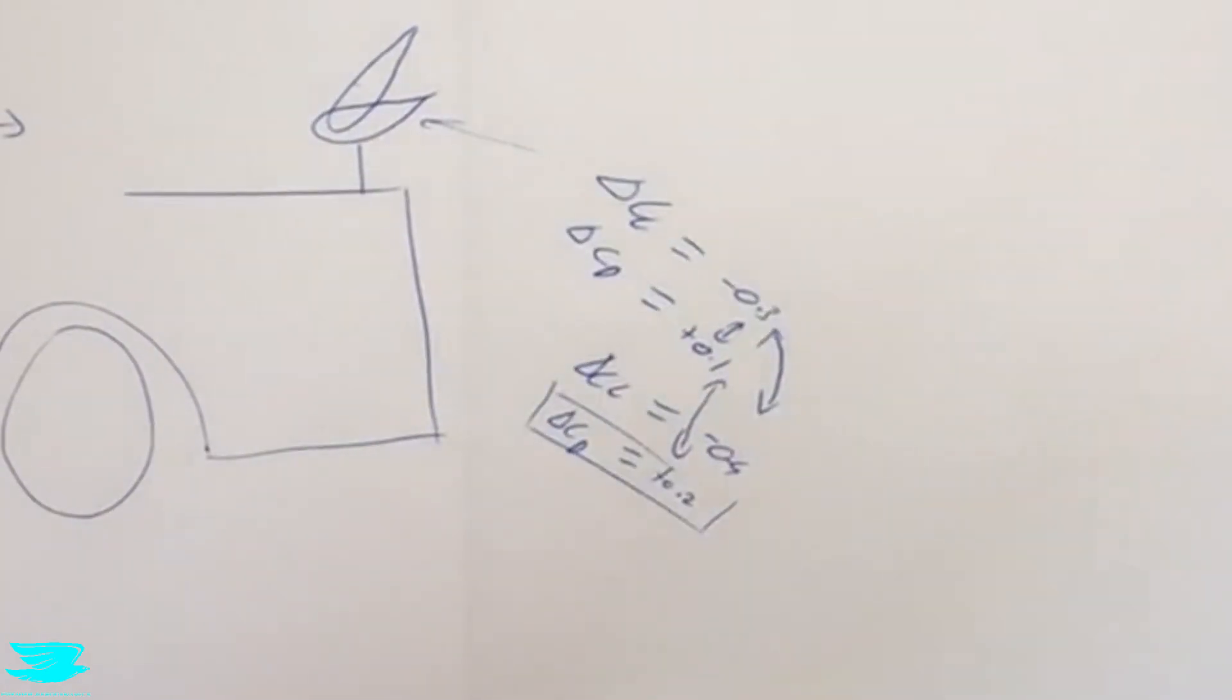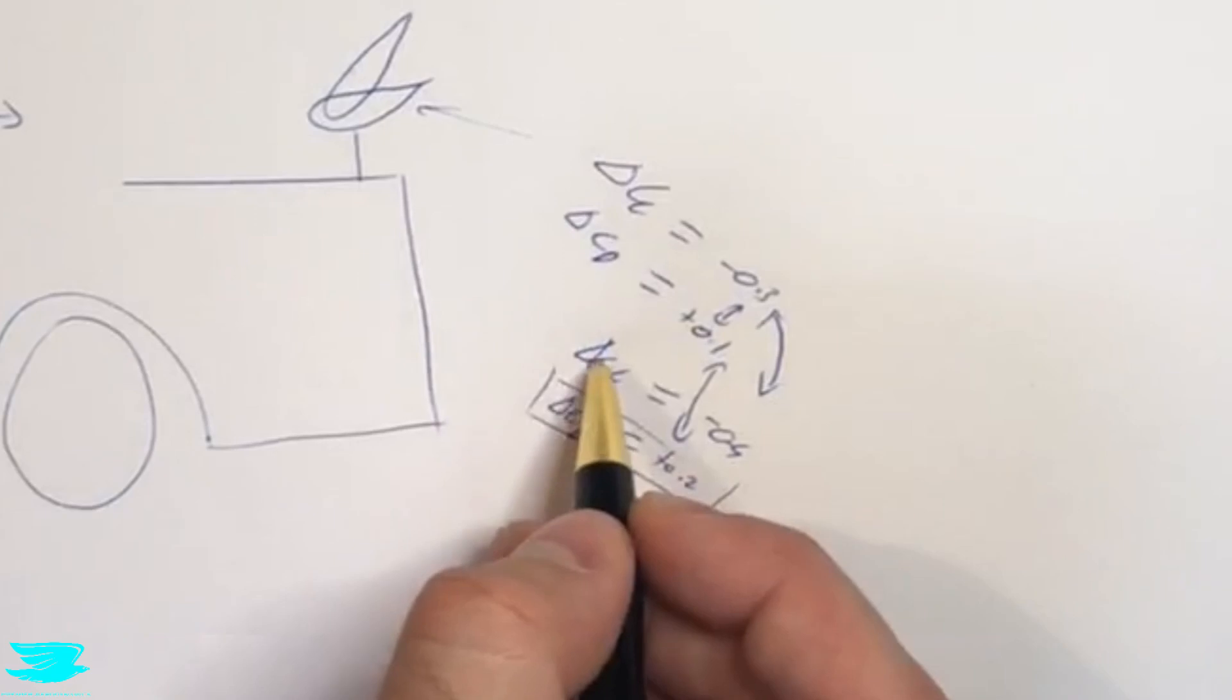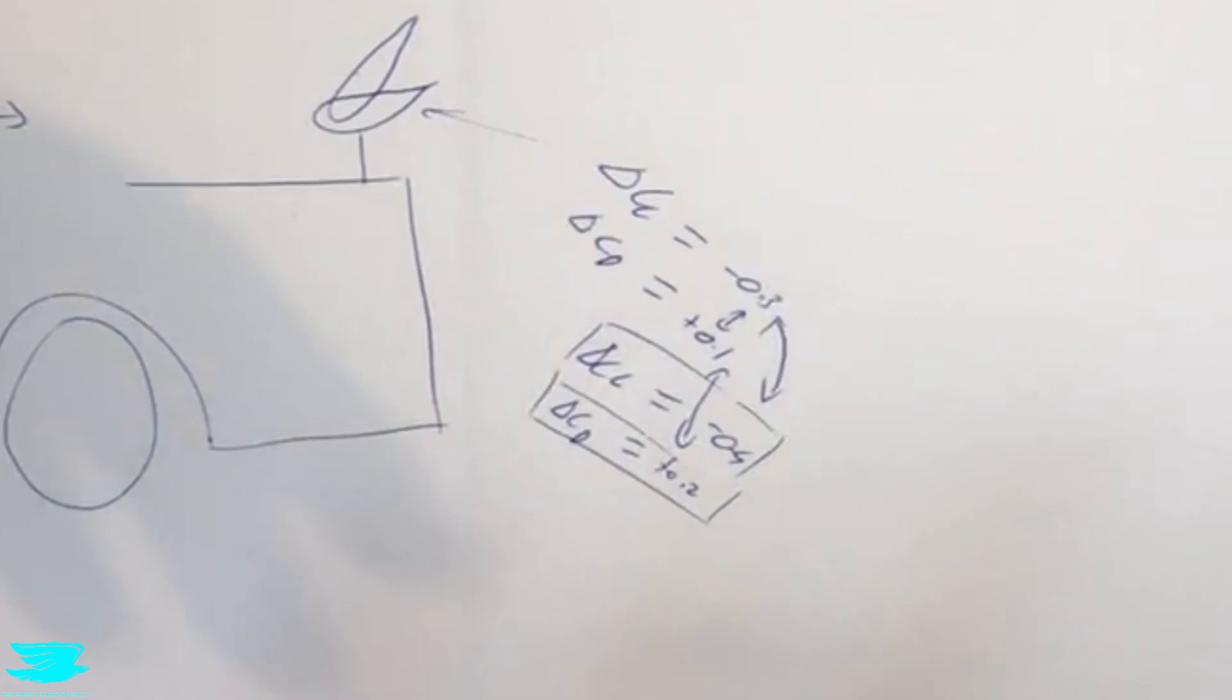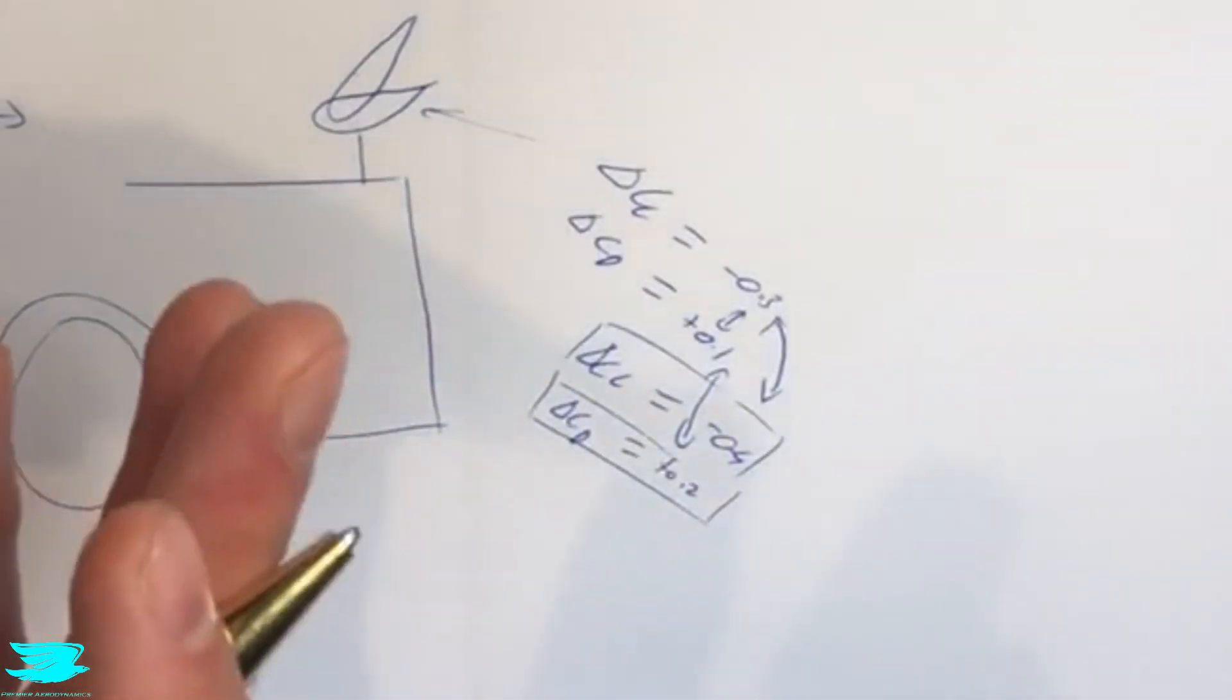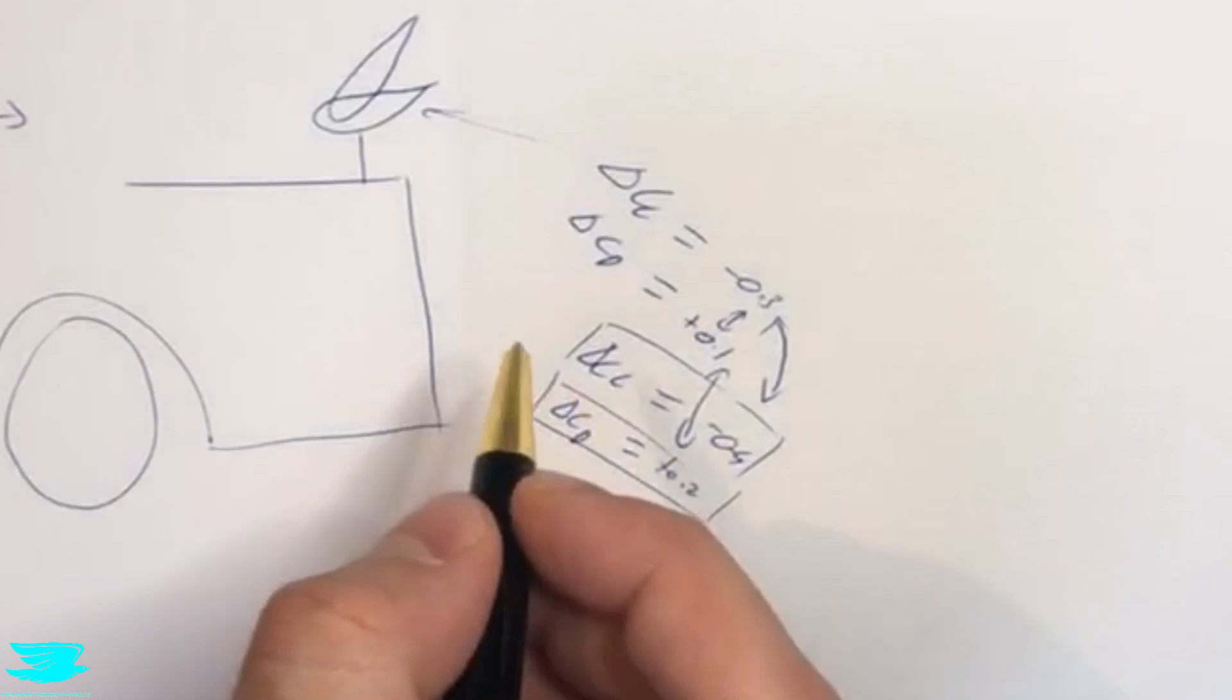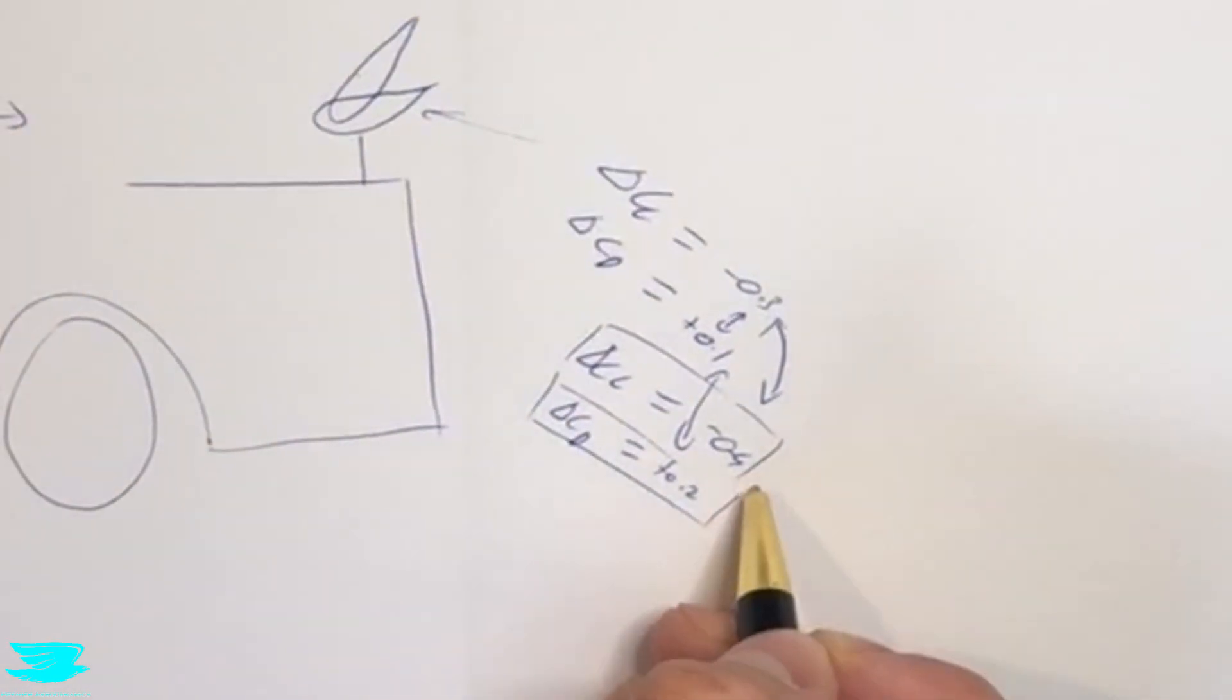But a somewhat unexpected consequence was that we also get an increase in the downforce as well, which is also good around corners. That's what we want. And it also depends on the handling of the car. So if you have really high downforce over the rear wheels and not so much over the front wheels, that can be a problem. That's a topic for another video. But in terms of just general downforce, this is a really good increase.